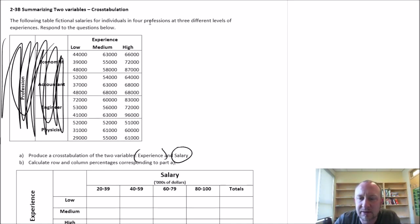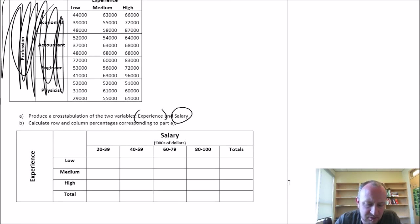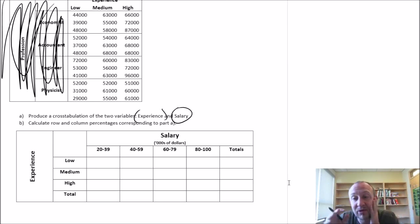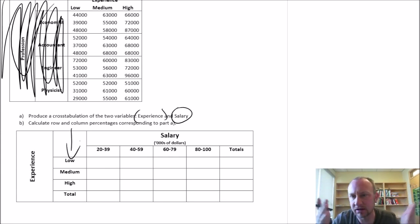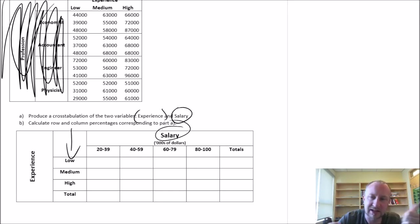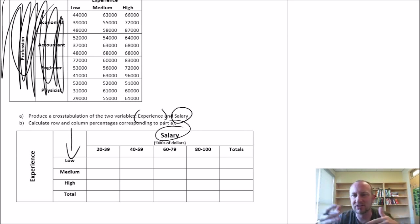I've gone ahead and produced a table, and I want to make a couple of points because I don't want you to overlook their importance if you're producing this on your own. One is that the type of data doesn't really matter. Here we have categorical data — really ordinal data with a ranking. So I've got ordinal data and quantitative data. When producing cross tabulations we can mix and match different types of data; that really doesn't matter.